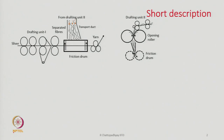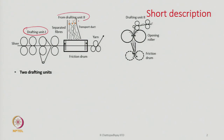Today's topic is DREF 3 friction spinning. DREF 2 we have already discussed and now we are going to discuss DREF 3 friction spinning. What you see here is a simple line sketch of the two important parts of the machine. There are two drafting units in this machine. In DREF 2 we have only one drafting unit, and in this case there is drafting unit 1 and drafting unit 2.